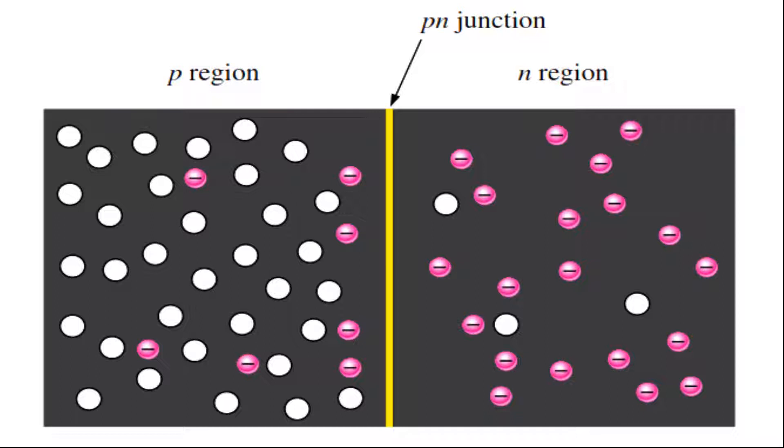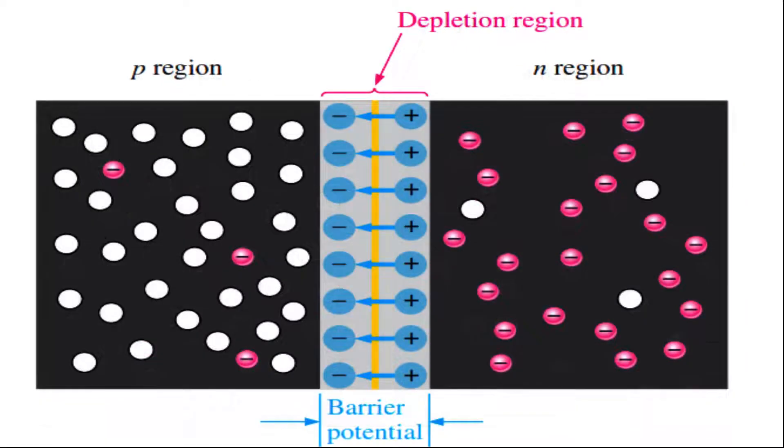The P side or the positive side of semiconductor has an excess of holes and the N side or the negative side has an excess of electrons. In a semiconductor the P-N junction is created by the method of doping.